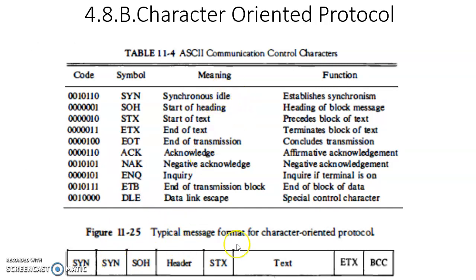This is the typical message format used in character-oriented protocol. The data is classified into two parts — similar to how a letter has a header followed by text. In this format, all data is classified into header and text, and they are sent along with some communication control characters like SYN, SOH, STX, and ETX, each having a specific purpose. For example, SYN is used to establish synchronization between source and destination. Two SYN characters are used to start the message format.